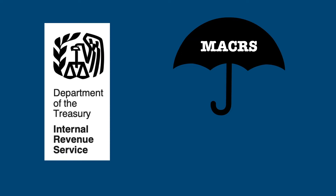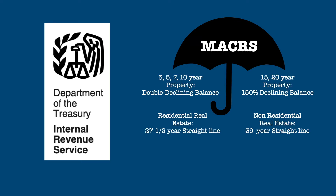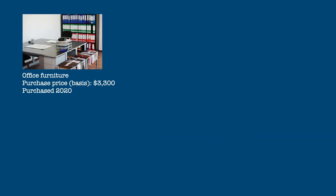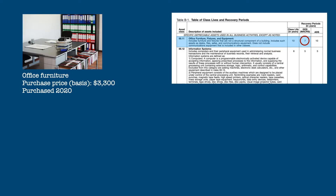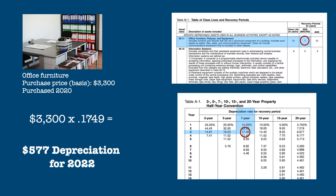The IRS groups all its allowable depreciation methods under one umbrella called MACRS — Modified Accelerated Cost Recovery System. MACRS eliminates most guesswork involved in calculating and reporting depreciation for tax purposes by establishing standardized recovery periods and depreciation methods. To calculate depreciation under MACRS, you look up the asset's recovery period in one table, look up the appropriate depreciation percentage in another table, and multiply that percentage by the adjusted basis of the asset.